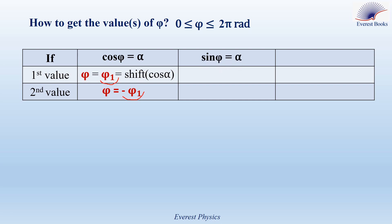Now, if sine phi is equal to alpha, similarly, the first value of phi can be given directly by pressing shift sine alpha on the calculator, so it gives phi1, which is the first value of phi.